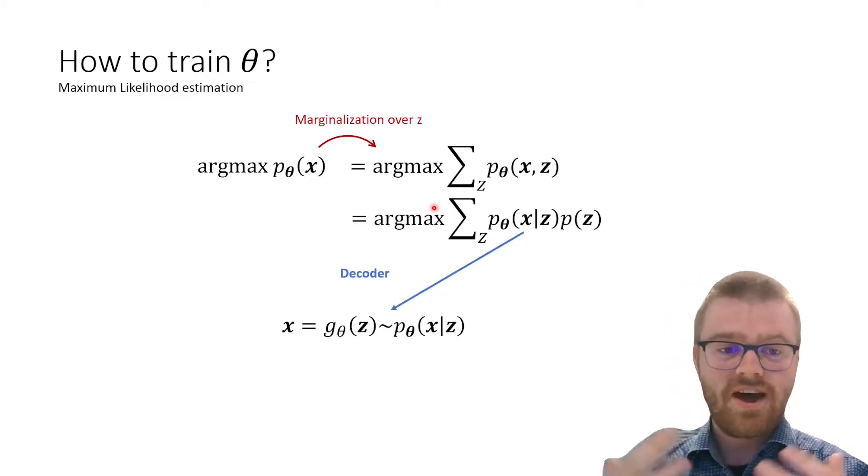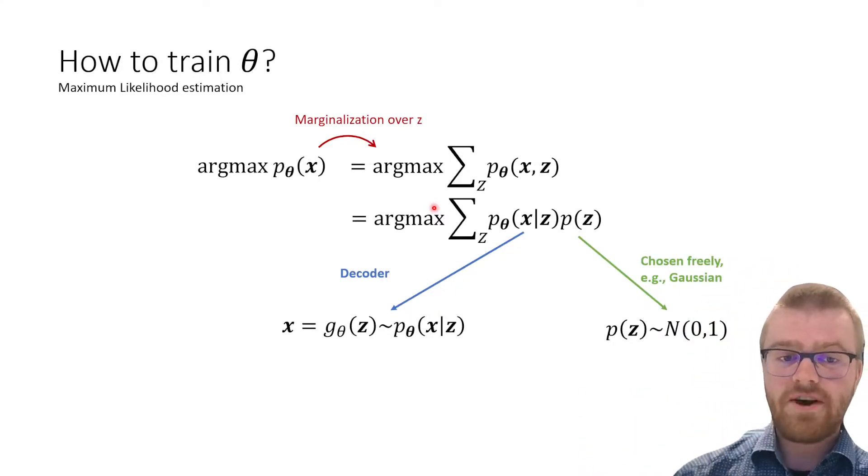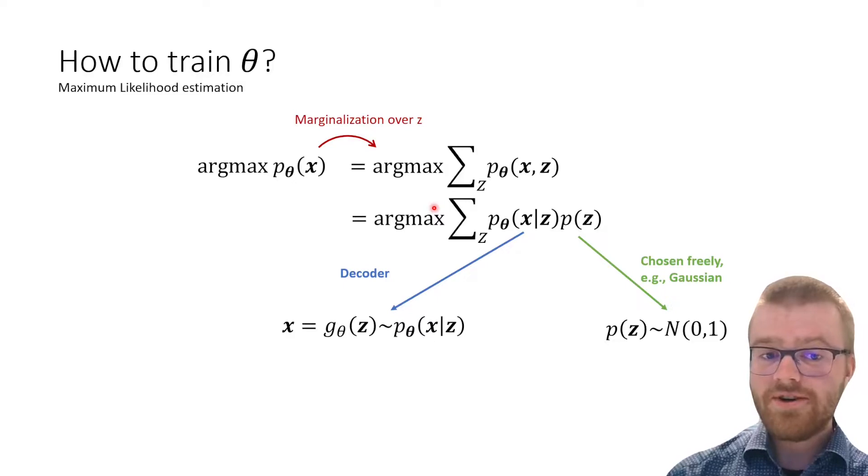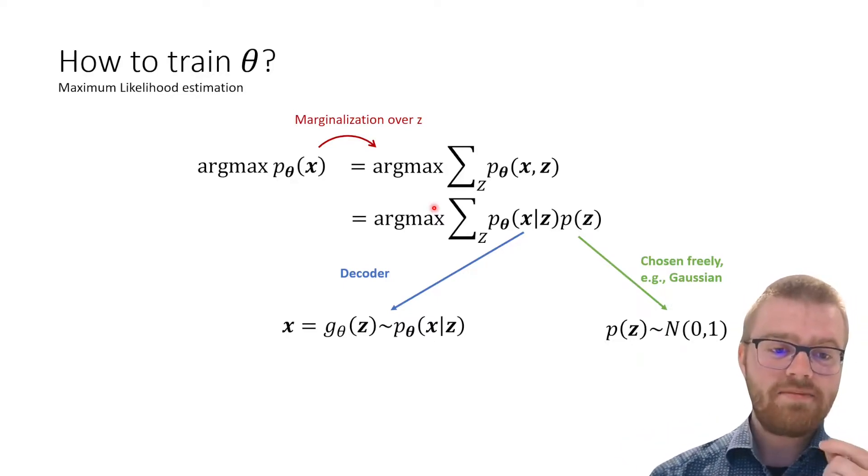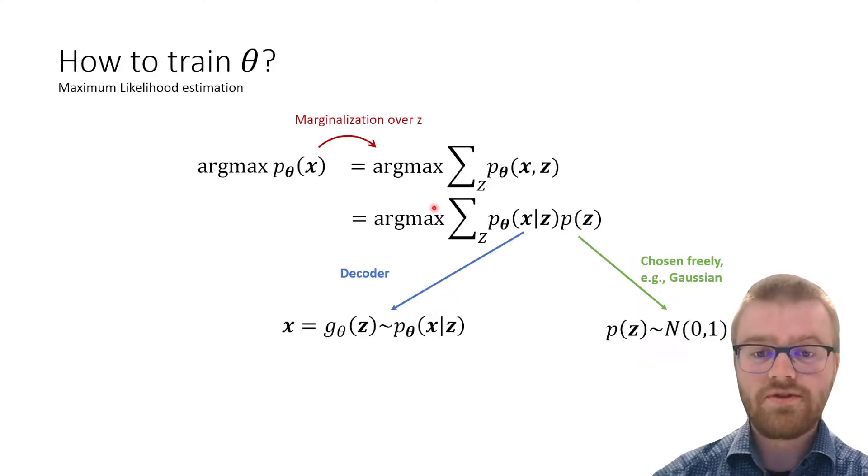This gives us a nice and easy understanding, because this left part is actually the decoder, x given the latent code z. And this right part is what we choose z to follow. For example, we can choose a Gaussian, as it's often known.